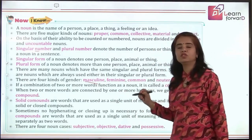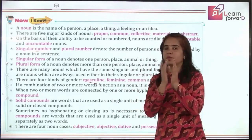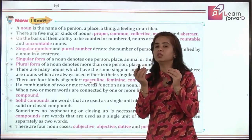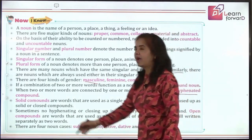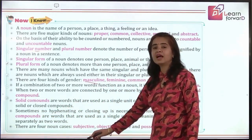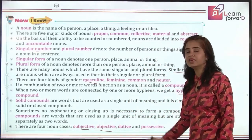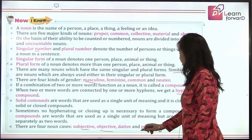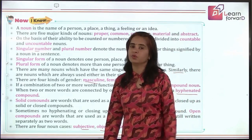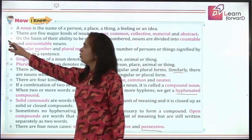We learned about compound nouns: hyphenated compounds use a dash between words; solid compounds put the words together without a space; open compounds write the two words apart with a space between them. And finally, we learned about noun cases: subjective/nominative, objective/accusative, dative for indirect objects, and possessive/genitive using the apostrophe — along with the rules for forming possessives correctly.